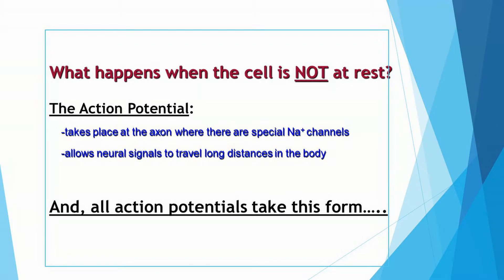The cell membrane at the axon contains something very special: sodium channels. As the neural signal travels along the axon, these special sodium channels open up and sodium with its positive charge rushes into the cell. So the inside of the cell momentarily becomes more positive than the outside of the cell. That is what happens during the action potential.